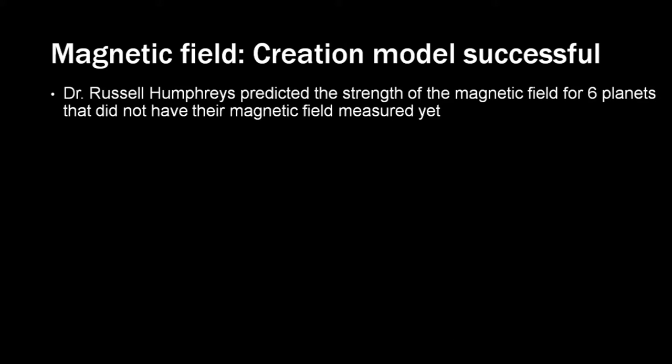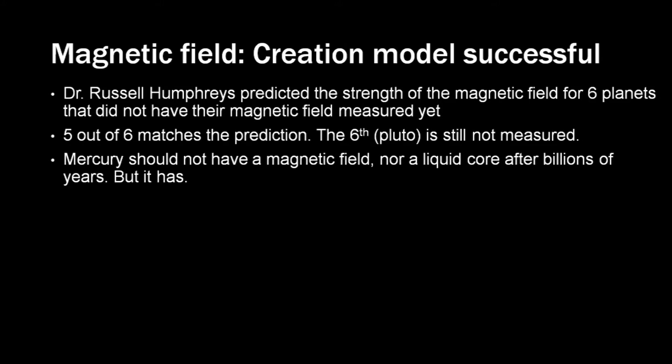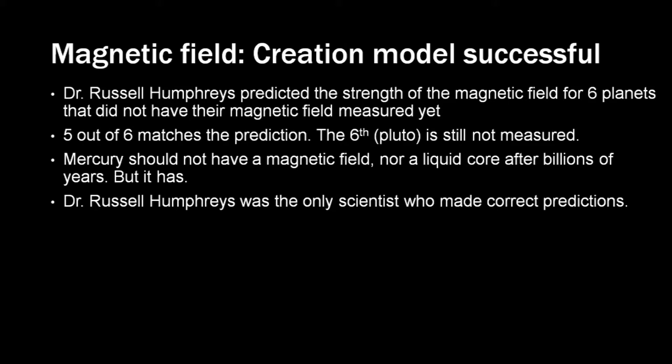Based on his theory, he made predictions of the magnetic field of six other planets before they were measured. Five out of six predictions were a match. The sixth, which is Pluto, still isn't measured. Scientists were absolutely surprised that Mercury has a magnetic field. It should not have molten core after billions of years, but it has. Dr. Humphreys was the only scientist who made correct predictions about the magnetic fields. All others were magnitudes off.